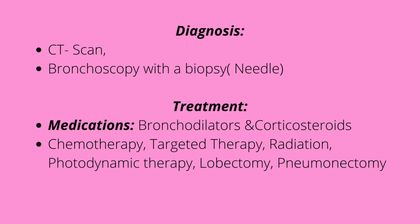For treatment, a patient with lung cancer — remember this is our airway, ABCs: airway comes first. So we're going to give them bronchodilators because their respiratory system will be compromised, as well as corticosteroids for the inflammation. We'll do chemotherapy, targeted therapy, radiation, photodynamic therapy, lobectomy, or pneumonectomy — either removing a lobe or the affected part of the lung.